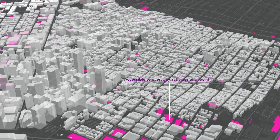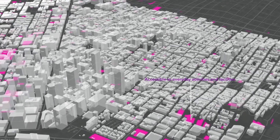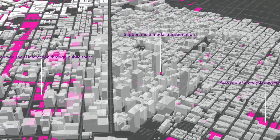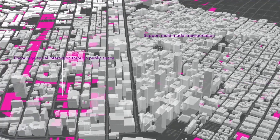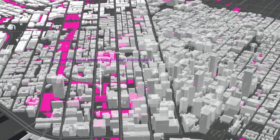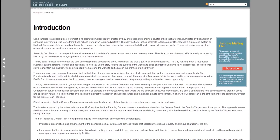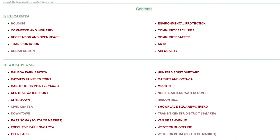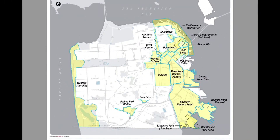Infill development becomes a promising approach for the city to ease the housing shortage. By locating suitable vacant parcels in the city, infill projects make full use of existing infrastructure and neighborhood characteristics. In the 2015 San Francisco General Plan, the city identifies high infill development potential in neighborhoods throughout the city, including downtown, Chinatown, Mission Bay, and Southern Market.